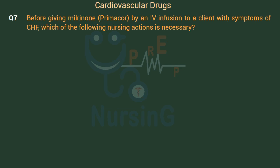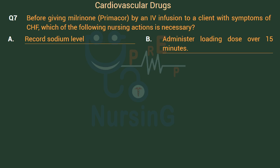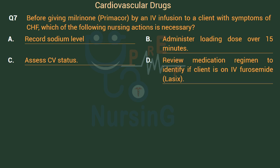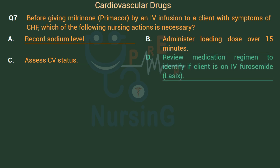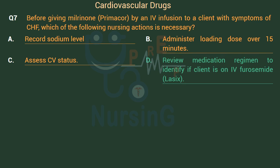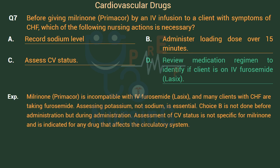Before giving milrinone (Primacor) by IV infusion to a client with symptoms of CHF, which of the following nursing actions is necessary? Option A: Record sodium level. Option B: Administer loading dose over 15 minutes. Option C: Assess cardiovascular status. Option D: Review medication regimen to identify if client is on furosemide (Lasix). The right answer is Option D. Milrinone is incompatible with furosemide, and many clients with CHF are taking furosemide. Assessing potassium, not sodium, is essential. The loading dose is administered during, not before, administration. Assessment of cardiovascular status is not specific for milrinone and is indicated for any drug affecting the circulatory system.